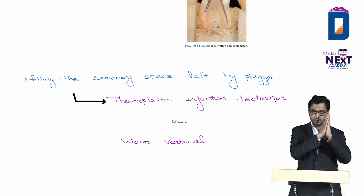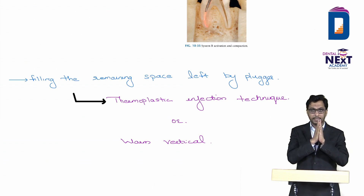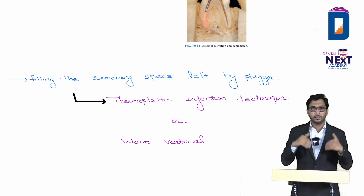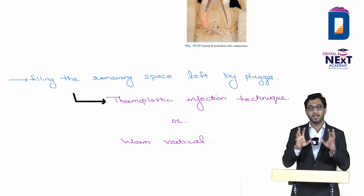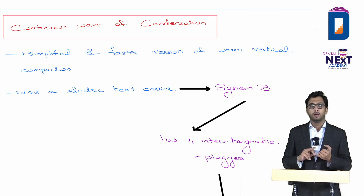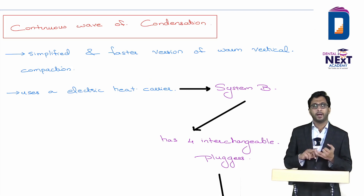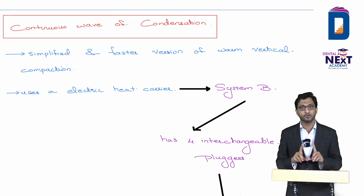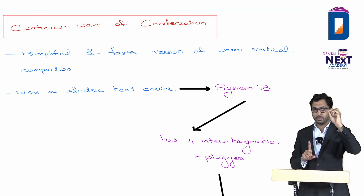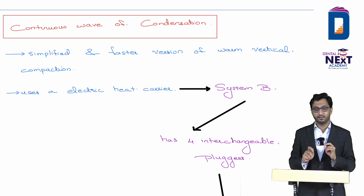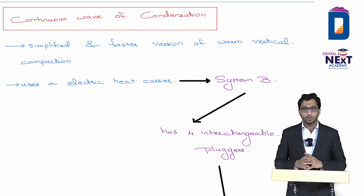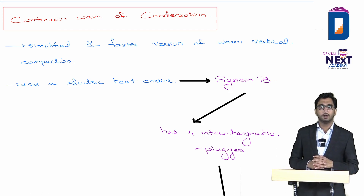To summarize the three methods covered: lateral compaction, warm vertical condensation, and continuous wave condensation. The difference between warm vertical and continuous wave is the instrument used — warm vertical uses a hand plugger or spreader, while continuous wave uses a heating device like System B or EI Down Pack. There should be no confusion between these two methods. Remaining techniques will be discussed in the next lecture.